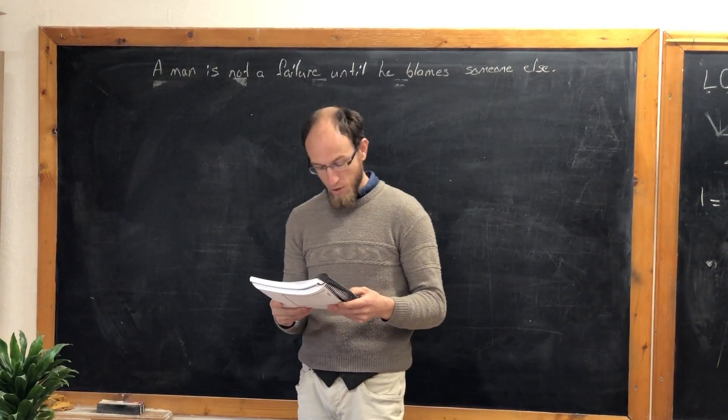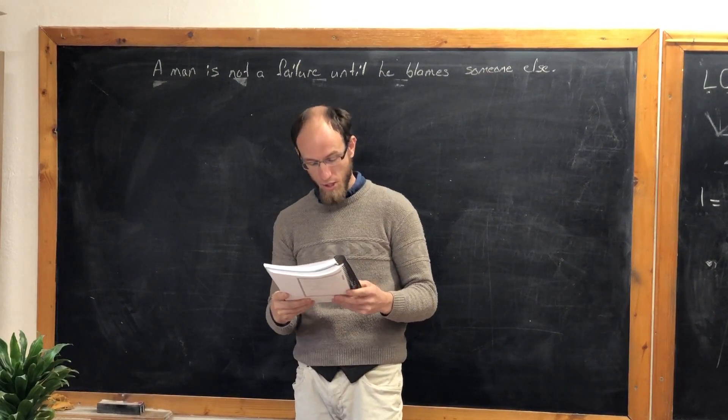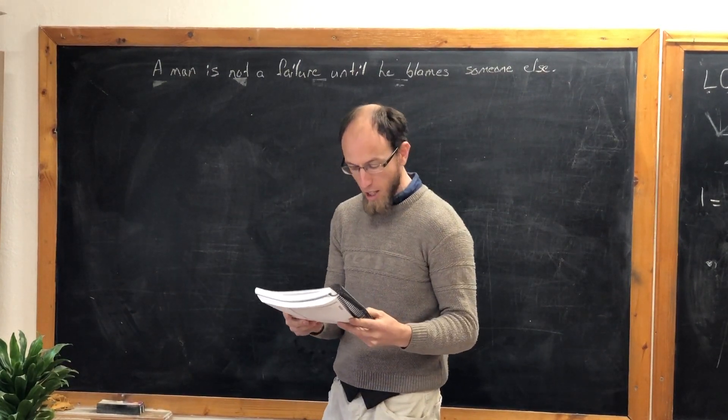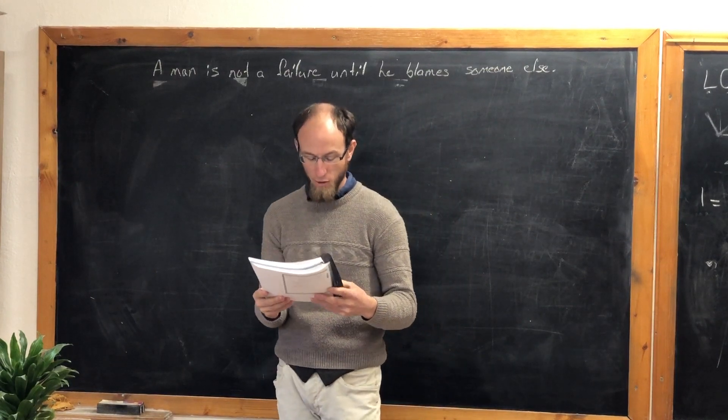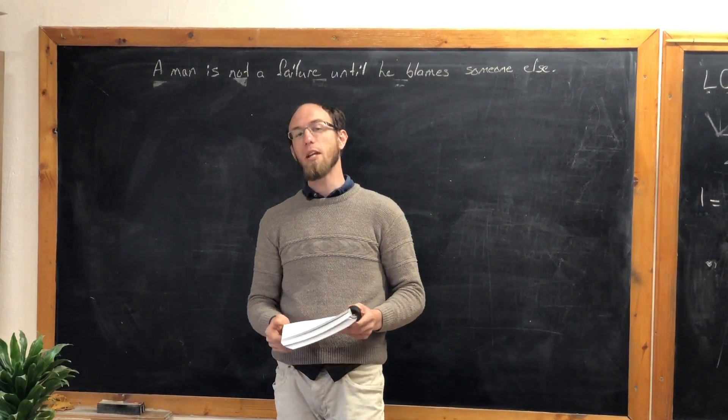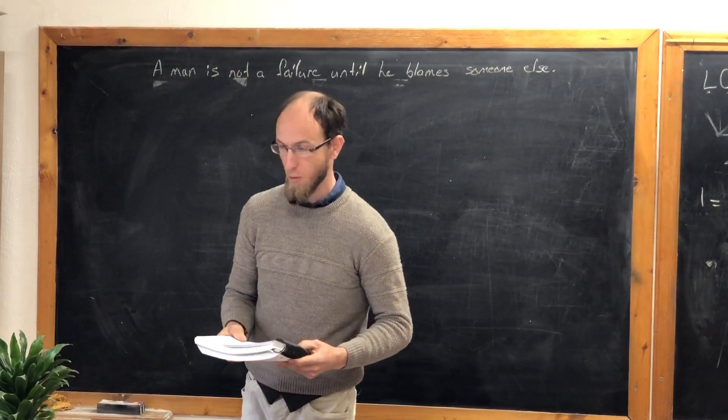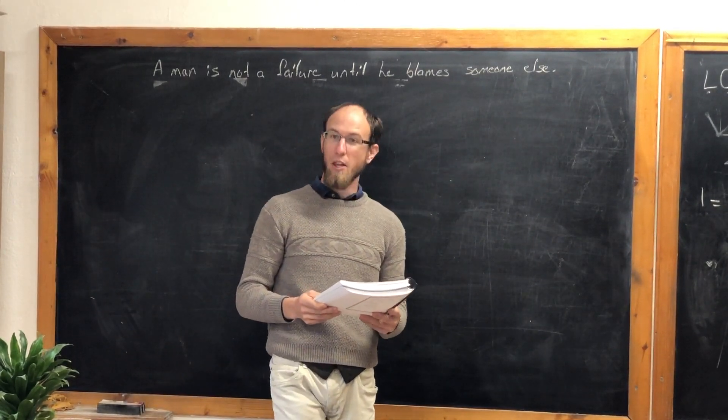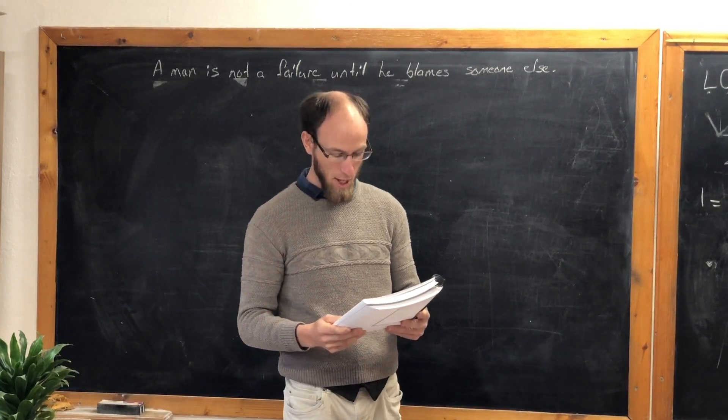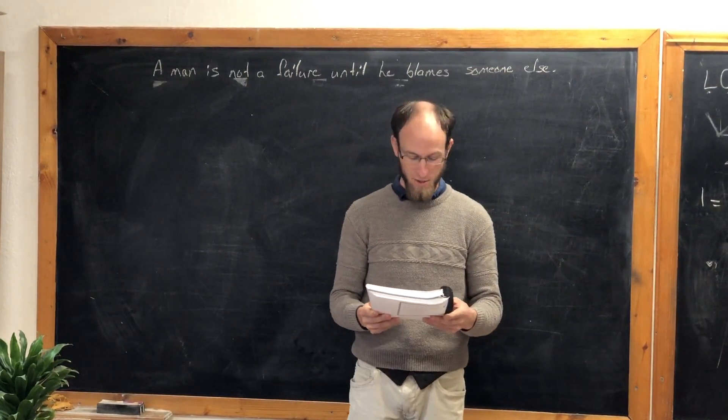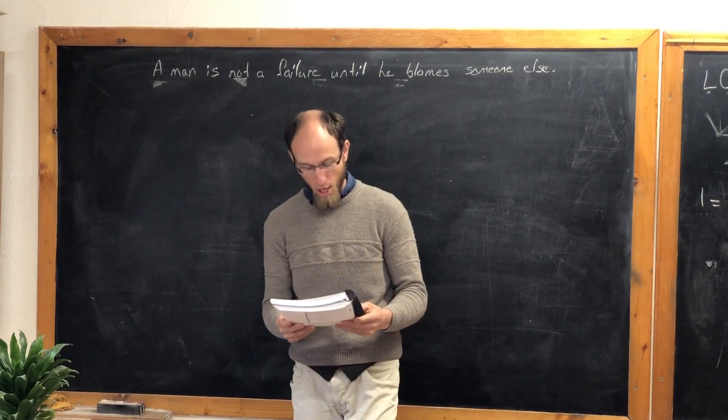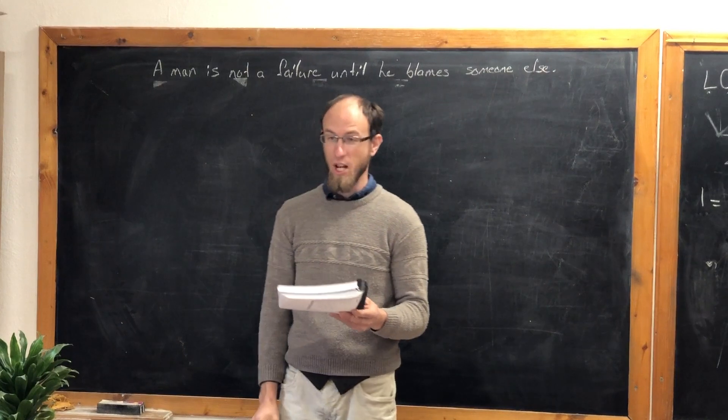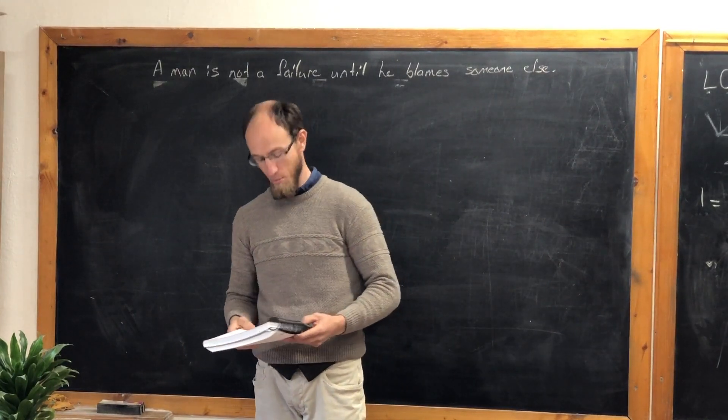Then from five thousand throats and more, there rose a lusty yell. It rumbled through the valley, it rattled in the dell. It knocked upon the mountain and recoiled upon the flat, for Casey, mighty Casey, was advancing to the bat. There was ease in Casey's manner as he stepped into his place. There was pride in Casey's bearing, and a smile on Casey's face. And when, responding to the cheers, he lightly doffed his hat. No stranger in the crowd could doubt, t'was Casey at the bat.